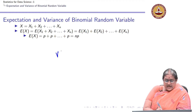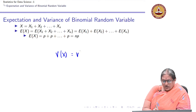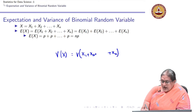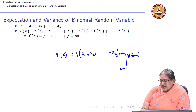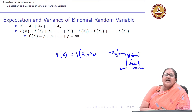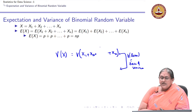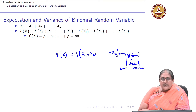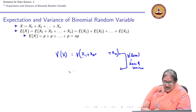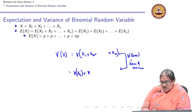Now looking at the variance of X: variance of X equals variance of x1 plus x2 plus ... plus xn. I use the property that variance of a sum equals the sum of variances when x1, x2, ..., xn are independent random variables. Using this property, variance of X equals variance of x1 plus variance of x2 plus ... plus variance of xn.